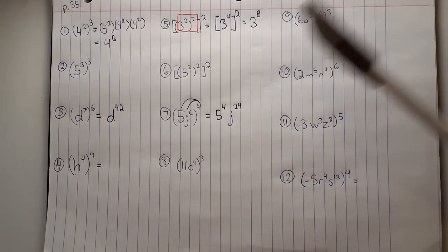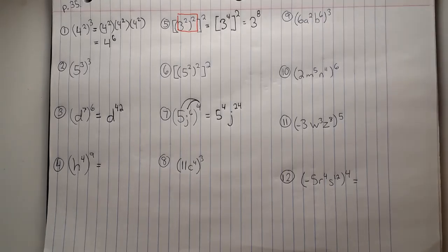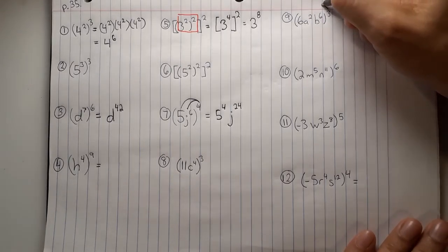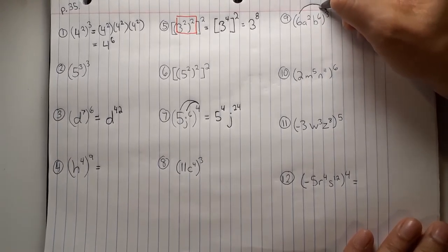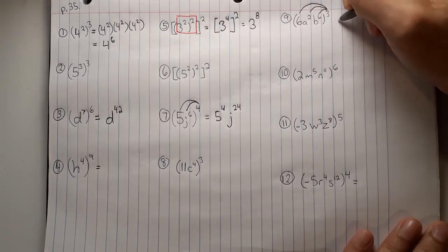I'll skip question 8. Let you try that one yourself. Question 9. The 3 will get distributed to the 6, the a squared, and the b to the power of 6.